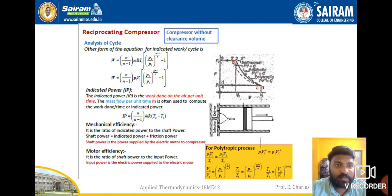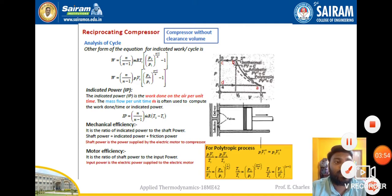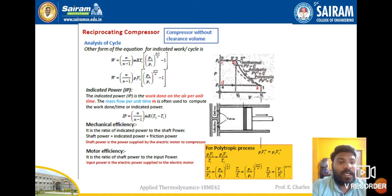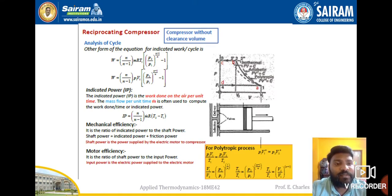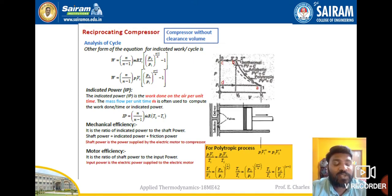Now let us see the polytropic process. In this process, P₁V₁/T₁ = P₂V₂/T₂, and the polytropic relation is P₁V₁ⁿ = P₂V₂ⁿ. As already covered in previous modules, the same relations can be written in terms of volumes and pressures, temperatures and pressures, or temperatures and volumes. So V₁/V₂ = (P₂/P₁)^(1/n), and T₂/T₁ = (P₂/P₁)^((n-1)/n).